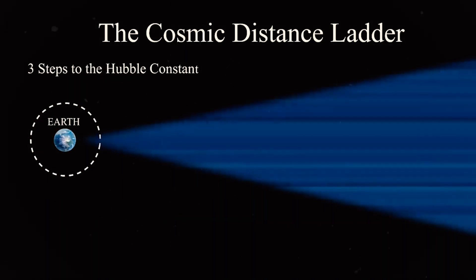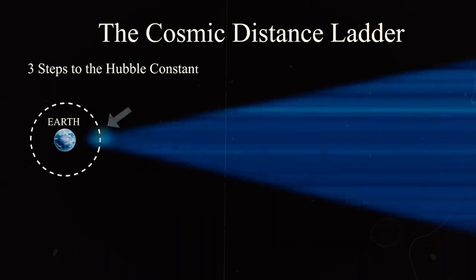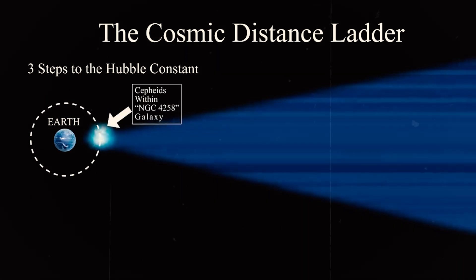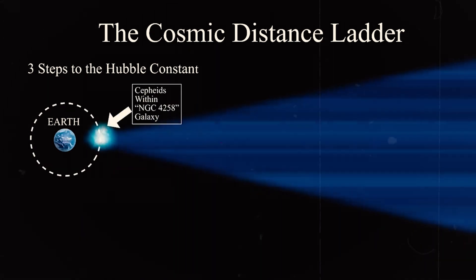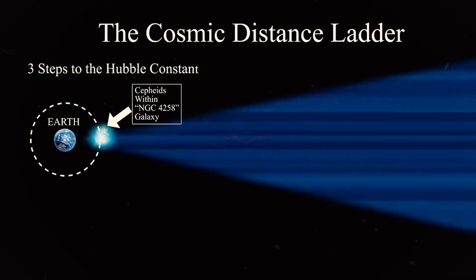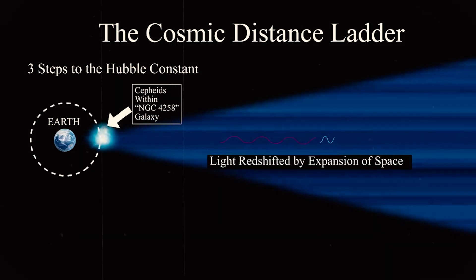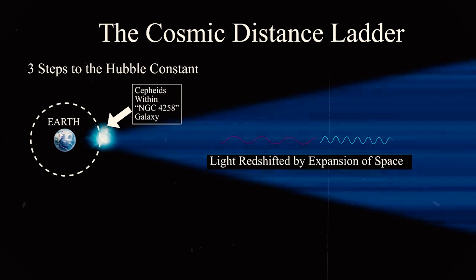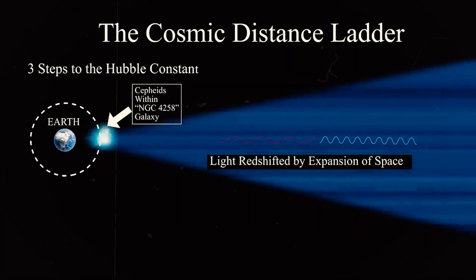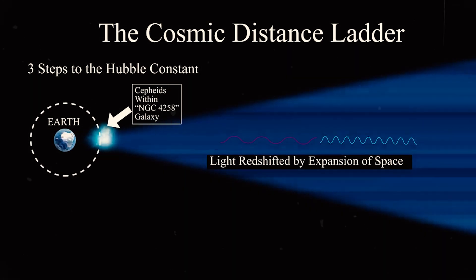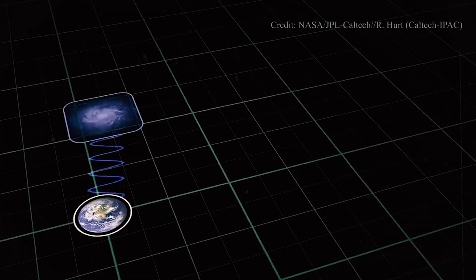The first rung on the cosmic distance ladder is the measurement of distances to nearby stars using the technique of parallax. This involves measuring the apparent shift in the position of a star against the background of more distant stars as the Earth orbits the Sun. By measuring the angle of this shift, astronomers can calculate the distance to the star.